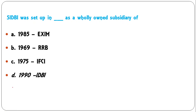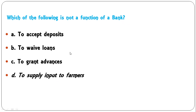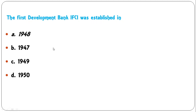Which of the following is not a function of a bank? Options: accepting deposits, waiving loans, granting advances, supply inputs to farmers. Accepting deposits, granting loans and advances are all functions of a bank. Supplying inputs to farmers is not a function of a bank. So D is the correct answer.